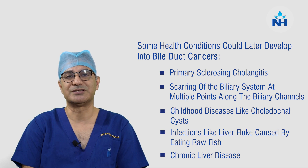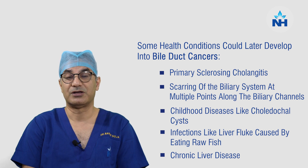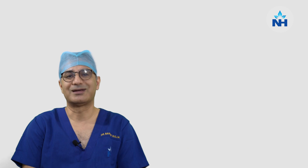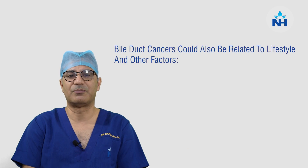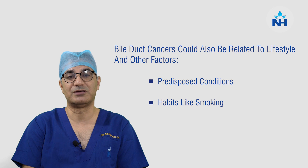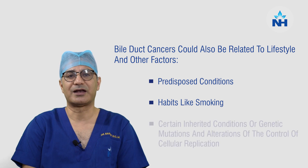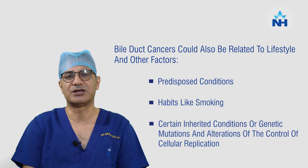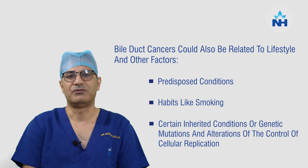Chronic liver disease — because of any cause — if you have a liver disease, that can predispose to development of bile duct cancers. Bile duct cancer can develop because of many predisposing conditions as well as habits like smoking, which have been shown as risk factors. And ultimately, it is a genetic mutation and alteration of the control of cell replication which leads to bile duct cancers.